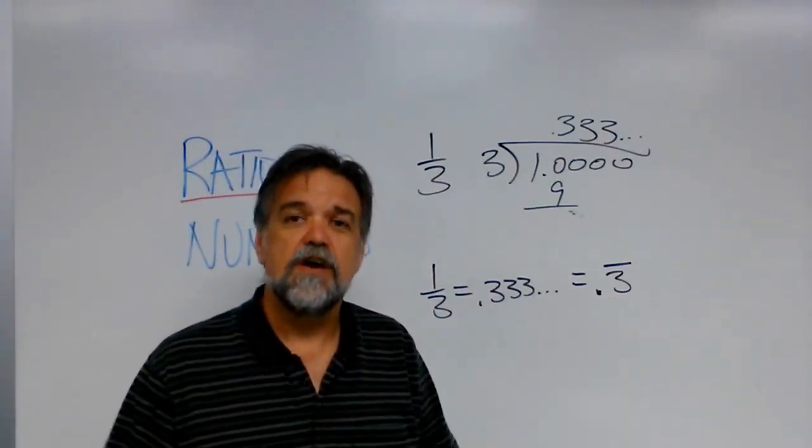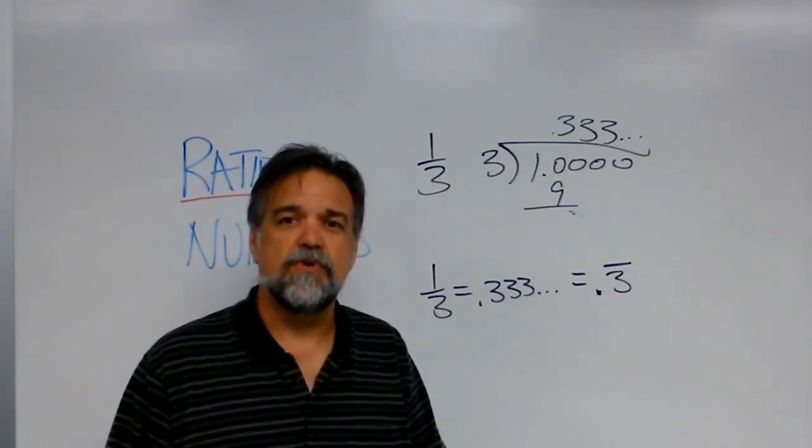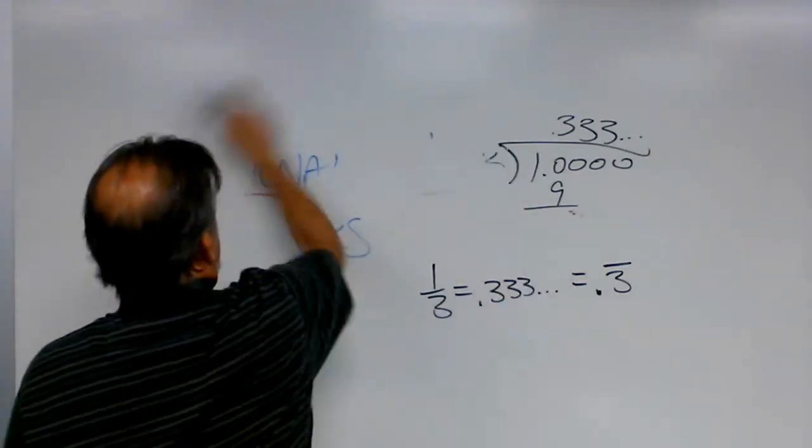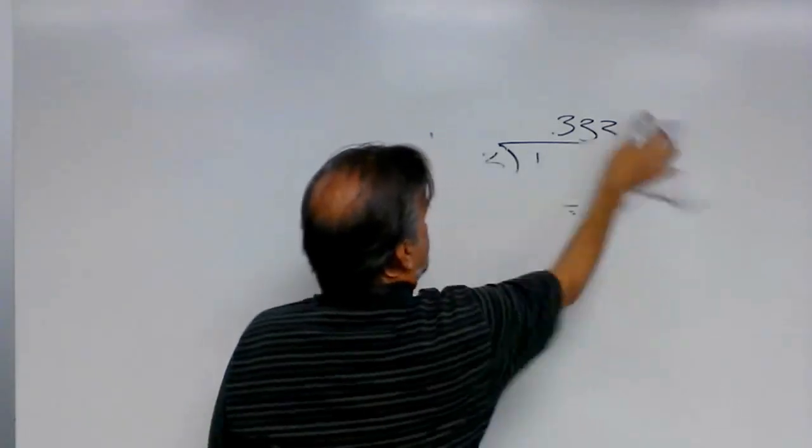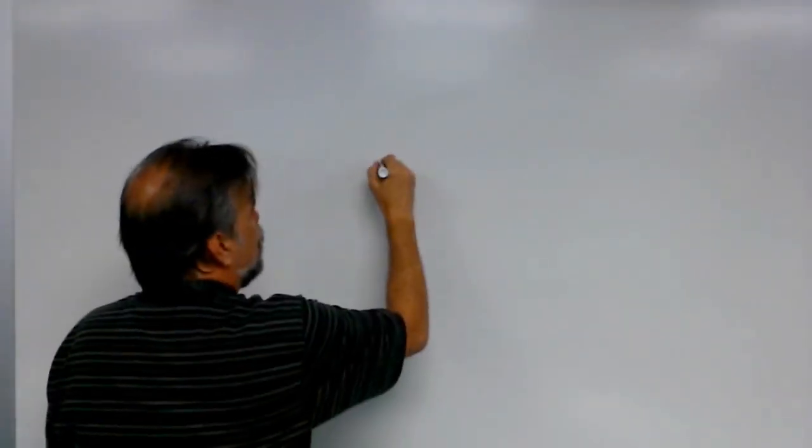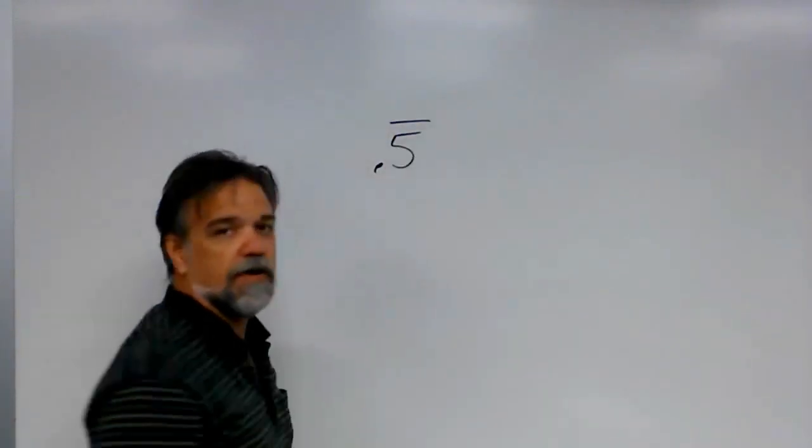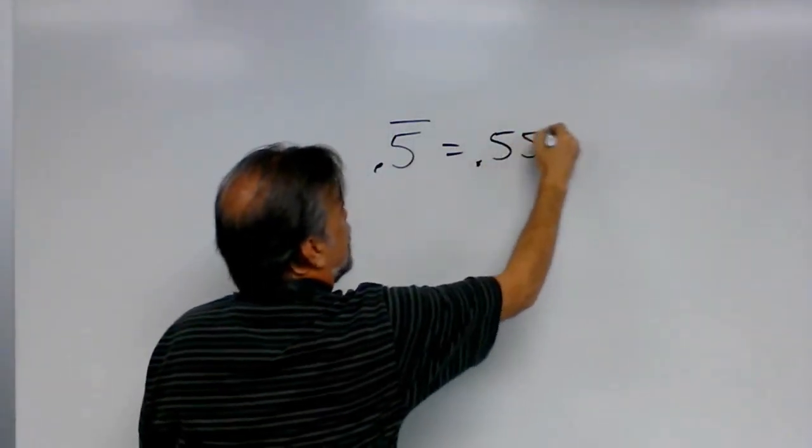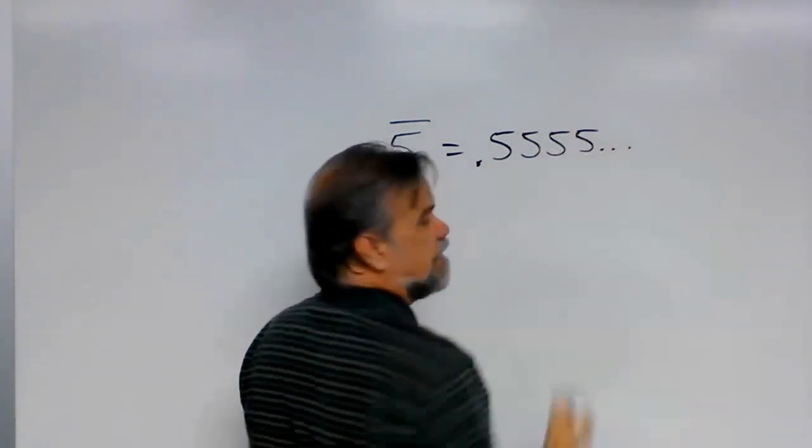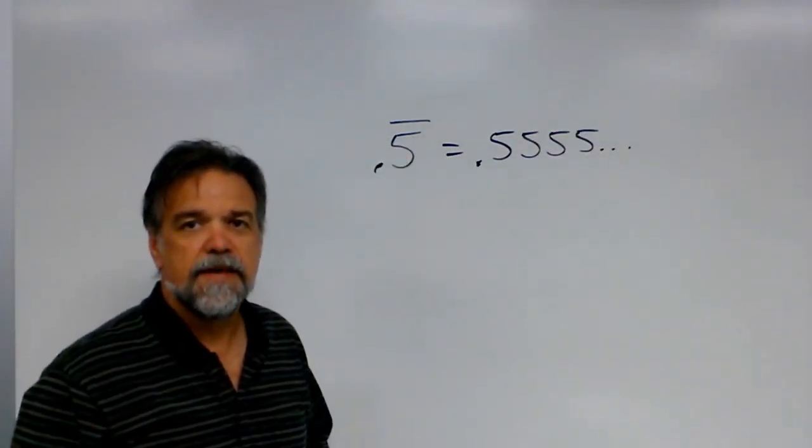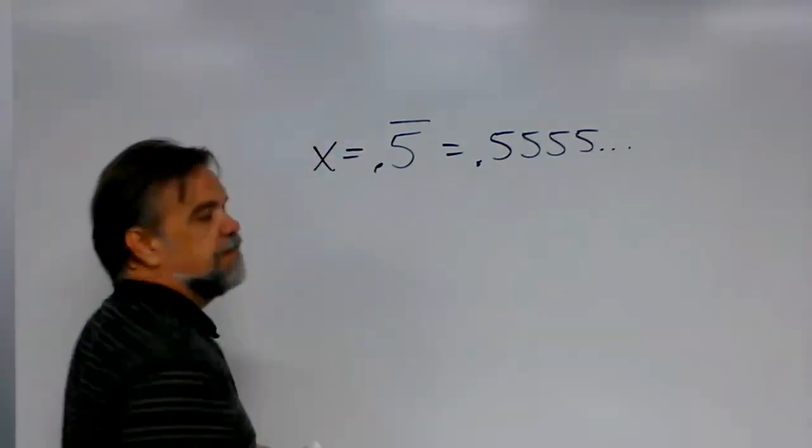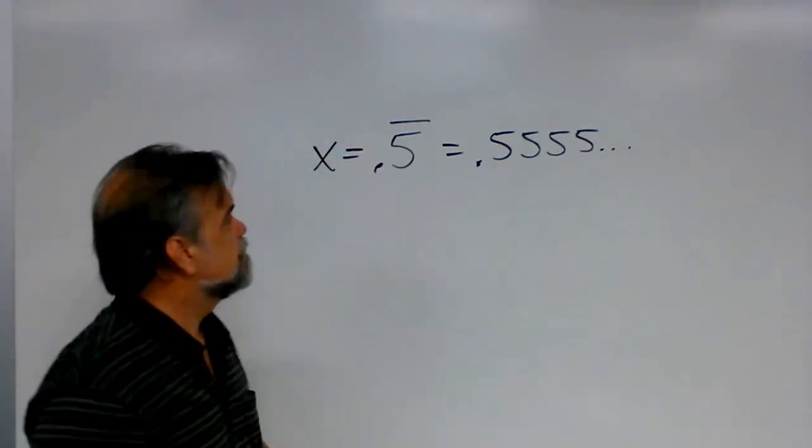Now, again, I'm asking, what if we have the repeating decimal and we want to write that as a fraction? I'll show you how. Let's take the example of point-five-bar, which is point-five-five-five, and on and on and on. And let's call it x. That's what x is.